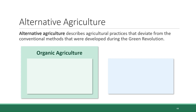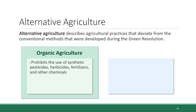The priority of organic agriculture is to avoid the application of synthetic chemicals to crops. Synthetic pesticides, herbicides, fertilizers, and other chemicals are prohibited from something to be considered organically grown. Organic agriculture also prohibits the cultivation of GMO crops.